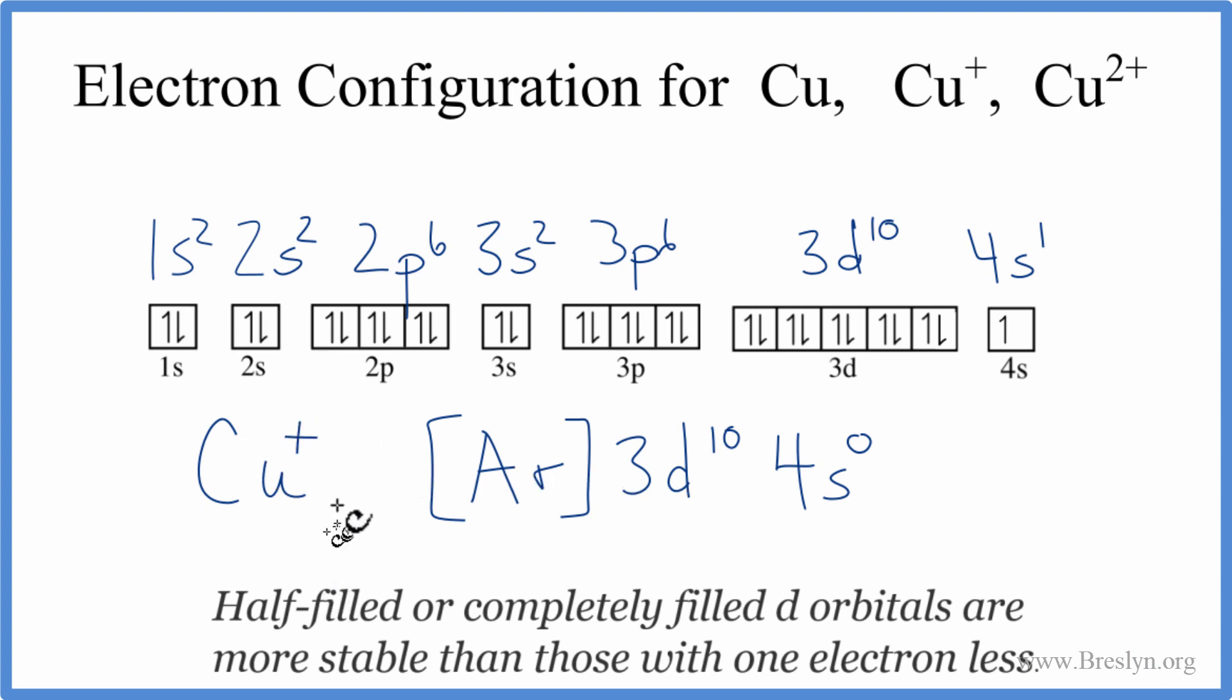If we want copper two plus, we'll just take away another electron. We'll have to take it from the d now, and that becomes 3d9. So this is the electron configuration for the copper two ion, Cu2+.